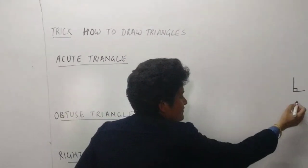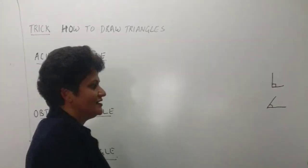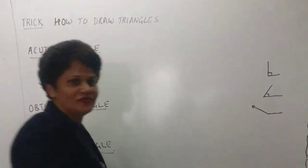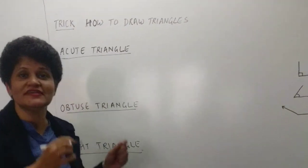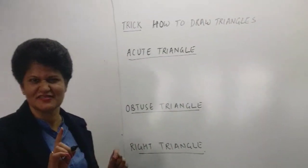And when it is bending to the front, it makes an acute angle. And when it is bending at the back, then it makes an obtuse angle. We will be using this same trick to draw a triangle, and see how easy it is.